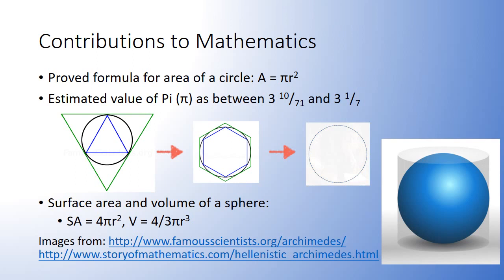Archimedes preempted many results of modern mathematics, including those of integral calculus and estimates for pi. He proved the formula for the area of a circle, estimated the value of pi as between 223/71 and 22/7, and proved that the surface area and volume of a sphere are two-thirds that of the circumscribing cylinder.